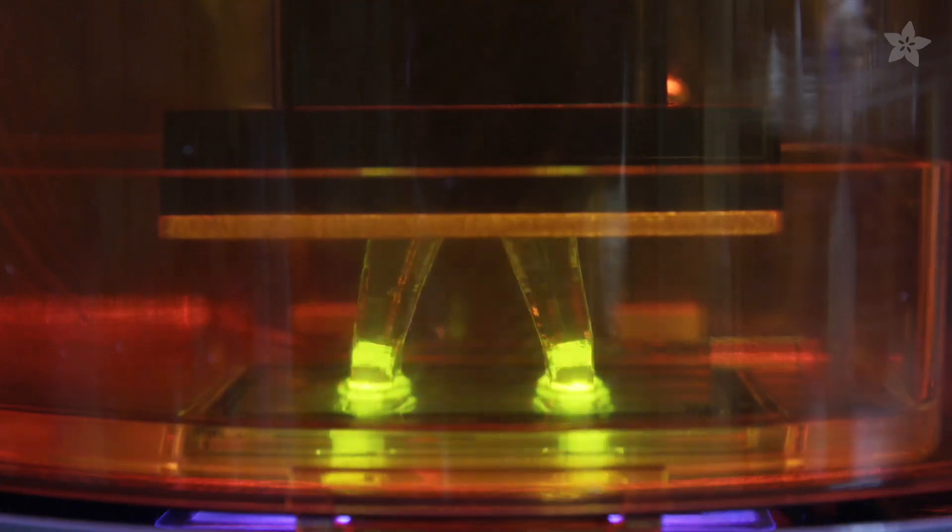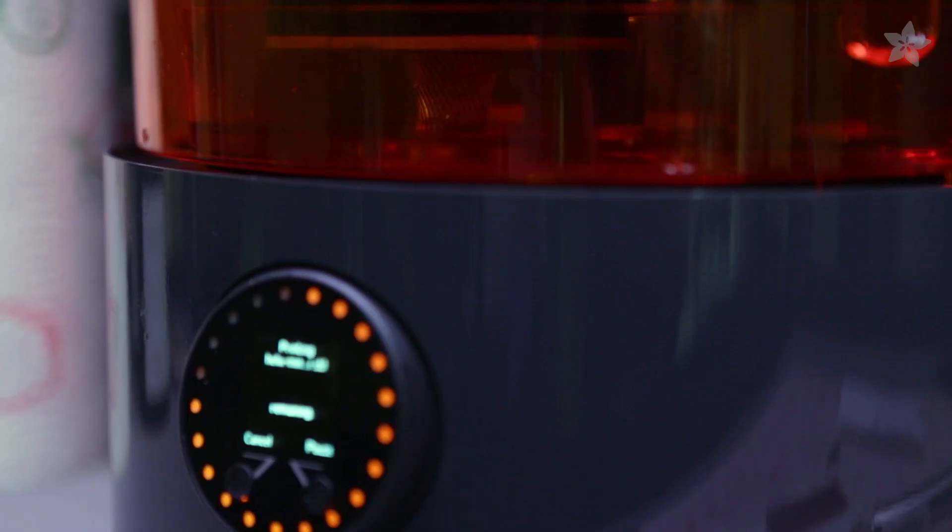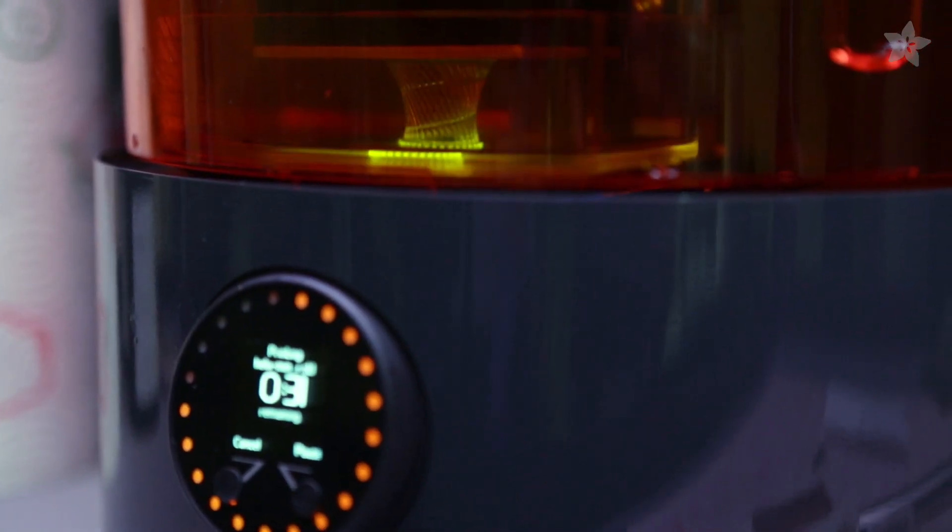The metal build plate moves up along the Z-axis and prints emerge from the resin tank. The Ember Printer uses a cure and peel technique. This is where it exposes and separates for each layer to create a high-definition part.